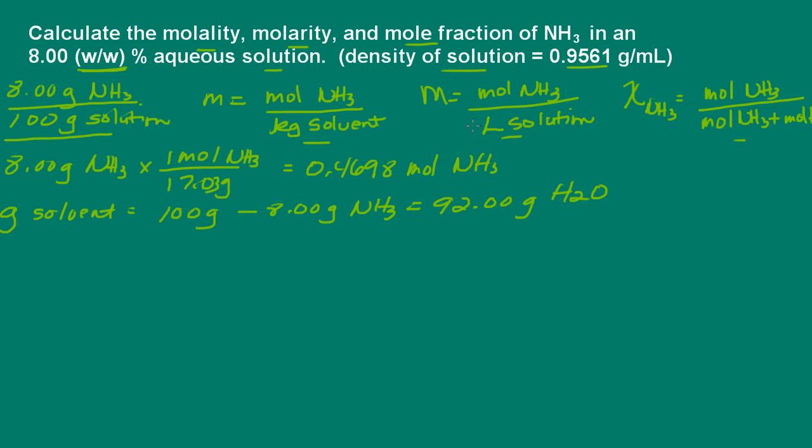Okay. Now, for the mole fraction, we're going to need the moles of water. So let's just go ahead and convert 92 grams of water to moles of water. And one mole of water will be 18.02 grams. And that's going to give us 5.1054 moles of water.